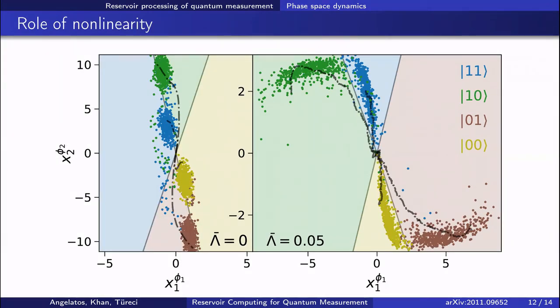Lastly, I would like to highlight the importance of non-linearity. On the left, I've shown results for an identical network, except that I have set its non-linearity to zero. We see that the final reservoir states still separate due to the different mean input signal amplitudes, but they all fall along roughly the same line.